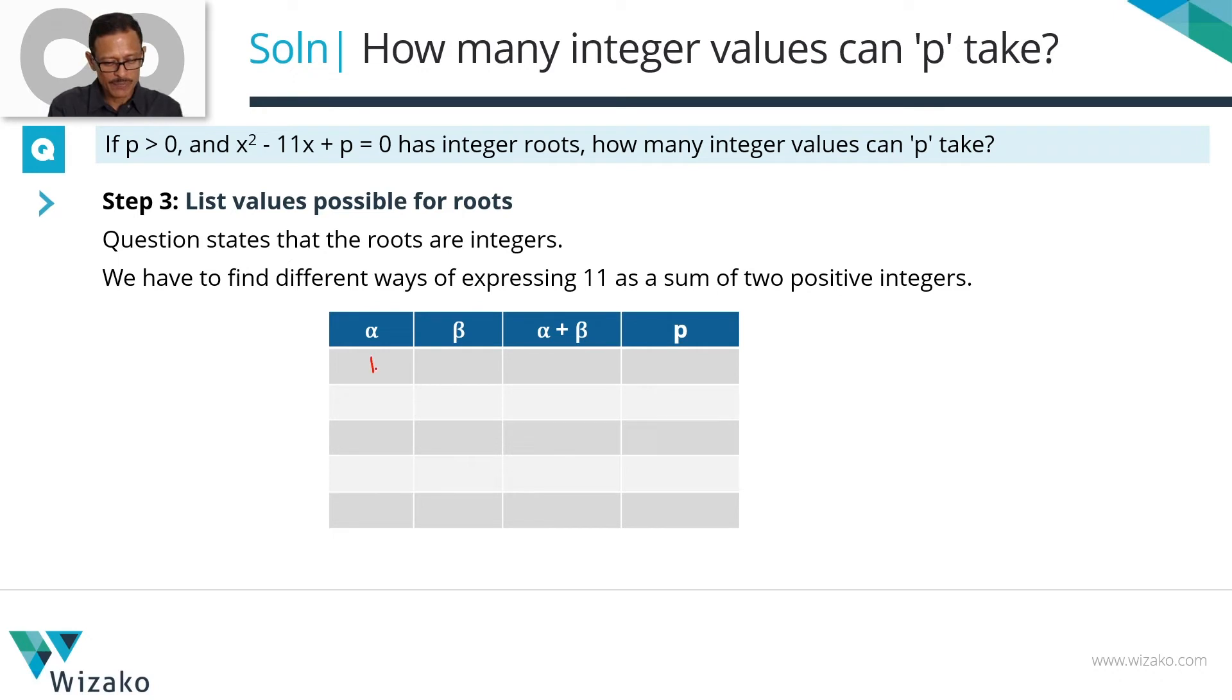First one: let alpha be equal to 1 and beta be equal to 10. So alpha + beta equals 11. We need to compute the value of p. We know that p is nothing but the product of the roots, alpha beta. So if alpha is 1 and beta is 10, alpha beta is equal to 10.